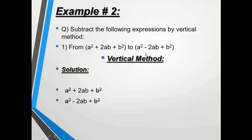In the vertical method, we change the signs of the lower expression: the positive a² becomes minus, the minus becomes plus, and the plus becomes minus. The a² terms cancel each other, and the b² terms also cancel. The 2ab terms have the same final sign, so 2ab + 2ab = 4ab. That is our final answer, and this is how you solve subtraction of two expressions by vertical method.